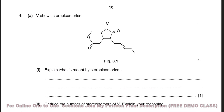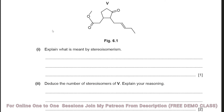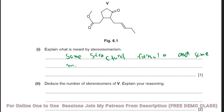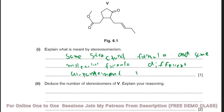Question 6, part b: Explain what is meant by stereoisomerism. Stereoisomers have the same structural formula and the same molecular formula but a different arrangement of atoms in 3D space.